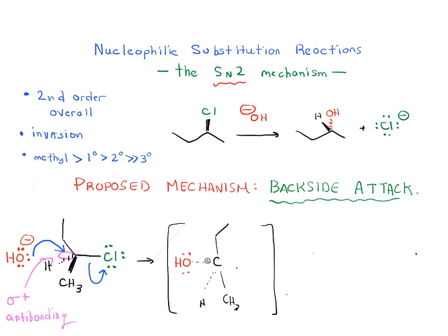This is what we call a five-coordinate carbon, and it's really only stable and present for an instant. This is what we mean by a transition state, something that's not very long-lived, it has a very short lifetime.